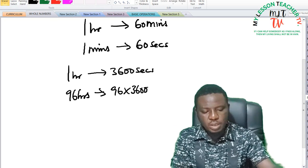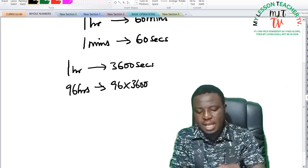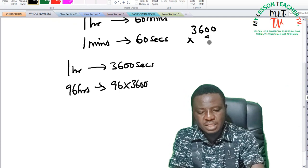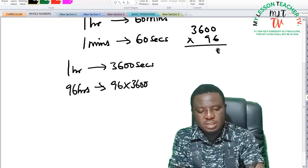So how do we get that? You now multiply 3,600 times 96.